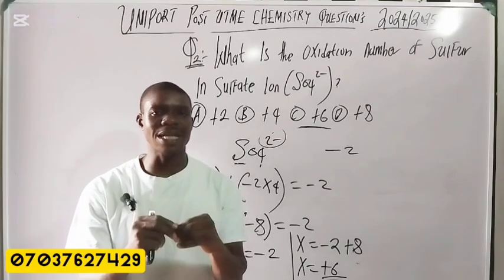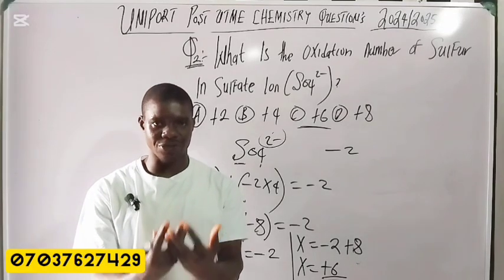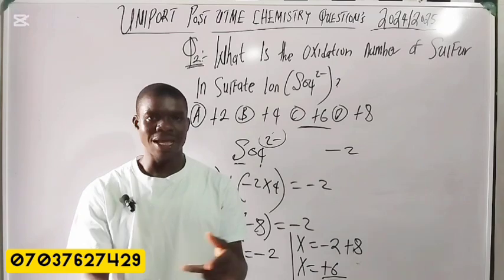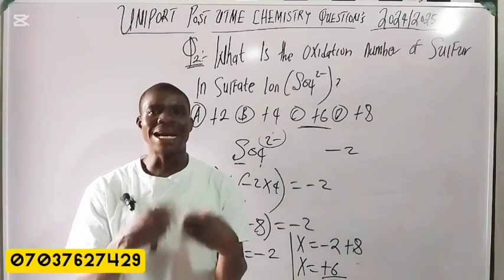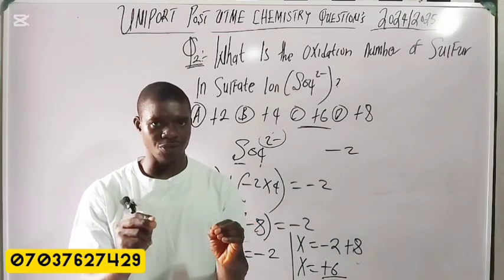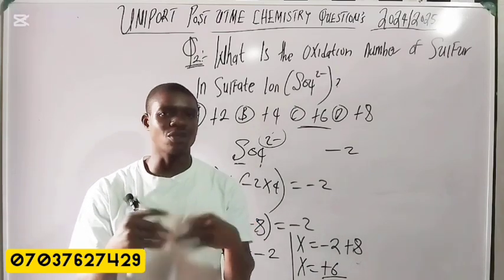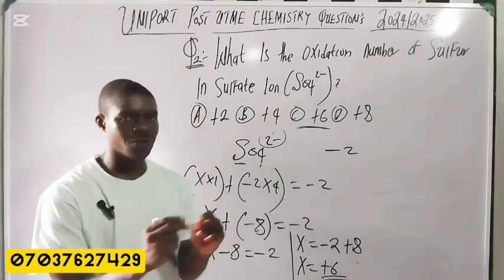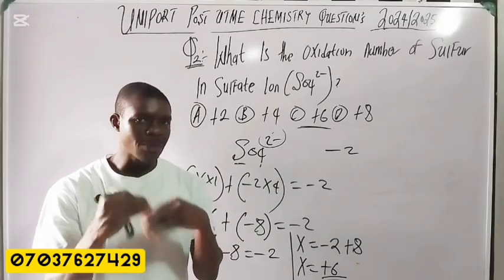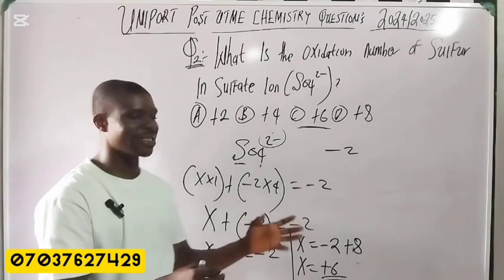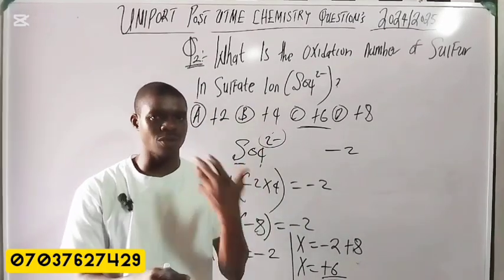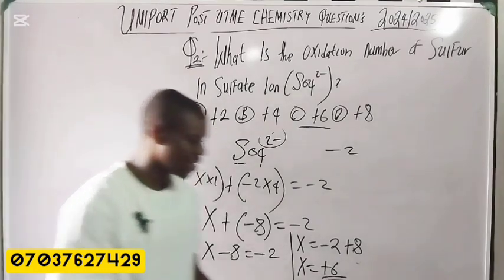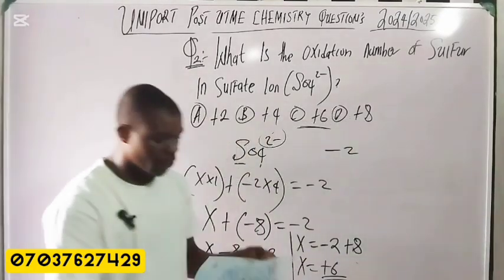Solving: x = −2 + 8 = +6. So the oxidation number of sulfur in the sulfate ion is +6, which corresponds to option C. Please make sure you cover everything about redox reactions — what oxidation and reduction are, how to identify the oxidizing and reducing agents, and how to calculate oxidation numbers.